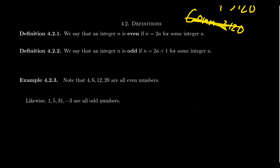Two very common early definitions students would see in a transition to advanced mathematics class: what does it mean for an integer to be even, and what does it mean for an integer to be odd. We say that an integer n is an even number if there exists some other integer a such that n equals two times a. That's what an even number is — if we call it an even number, we gain this property and nothing else.